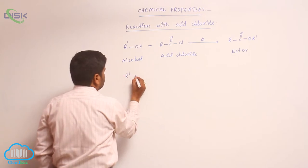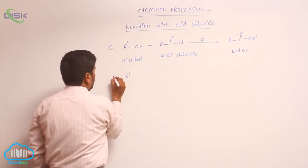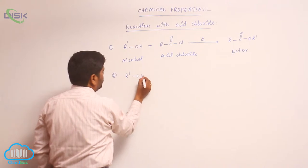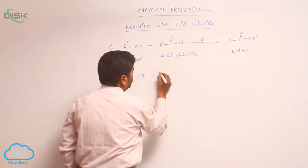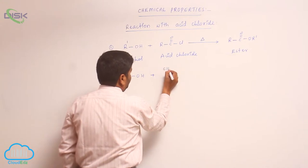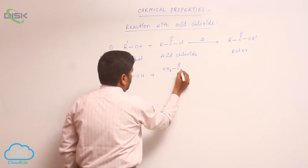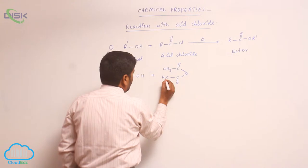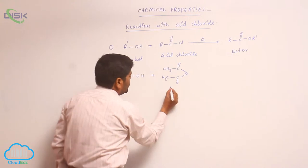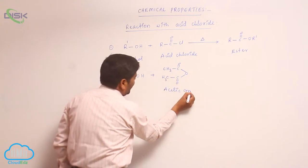Alcohols also react with acetic anhydride. Acetic anhydride has the structure CH3-C(=O)-O-C(=O)-CH3, and this compound is known as acetic anhydride.